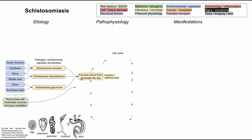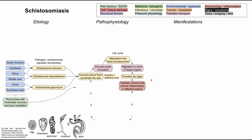Once the cercaria penetrates the skin, it enters the circulation through the bloodstream and matures into the adult schistosome. The adult worms then migrate to the veins of the target organs. The female adults lay eggs in these organs, triggering an inflammatory reaction — including capillary closure and chronic inflammation in the affected organs.